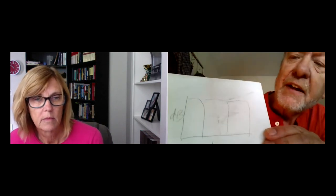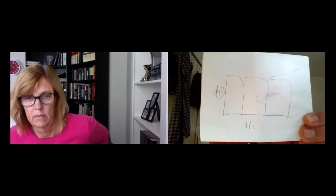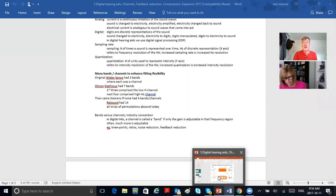The original Widex, the first digital hearing aid in 1997, had three channels — each channel fairly wide. If you think of a frequency response from 125 Hz to 8,000 Hz, you've got pretty wide channels — three big regions, like lows, mediums, and highs — and you could raise or adjust those to accommodate the client's hearing loss.